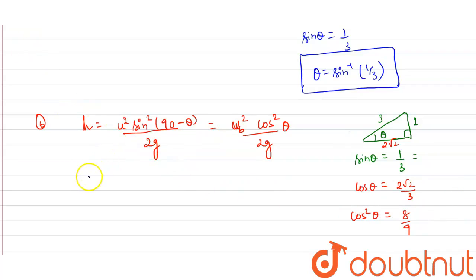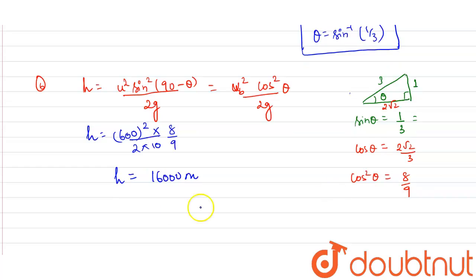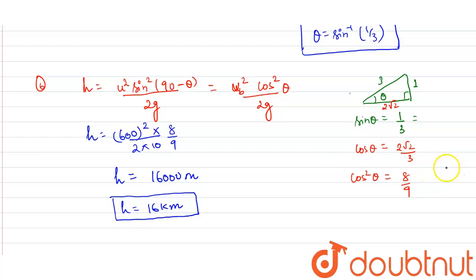Substituting the values, the maximum height equals 600 squared multiplied by 8/9, divided by 2 × 10. This gives h equal to 16,000 meters, or 16 kilometers. So the bullet can attain a maximum height of 16 km, and the plane must fly above 16 km to avoid being hit.